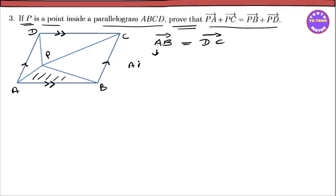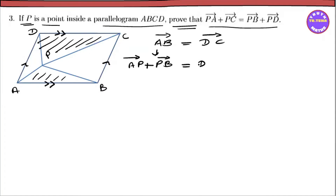AB is the same as AB vector plus AB vector. It is equal to DC. DC is the parallel triangle, and it follows from the parallelogram that DB plus BC. This is the same as AB vector, negative PA vector.